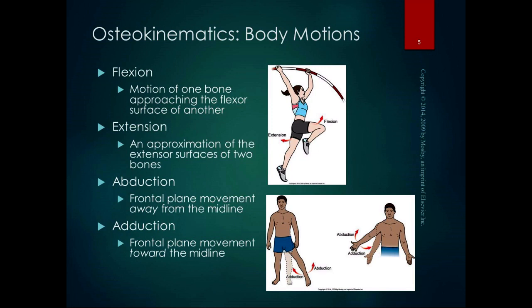The next pair is abduction and adduction. Abduction is frontal plane movement away from the midline — like the outward motion of jumping jacks. Adduction is frontal plane movement toward the midline, bringing the arms or legs back to anatomical position.